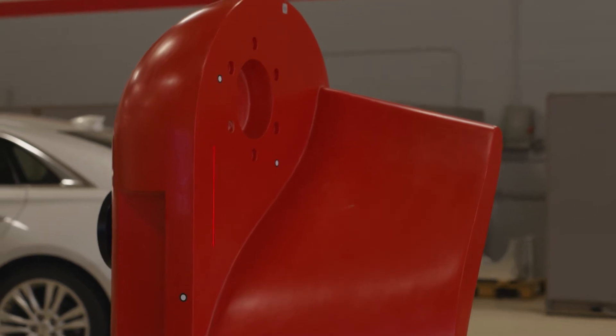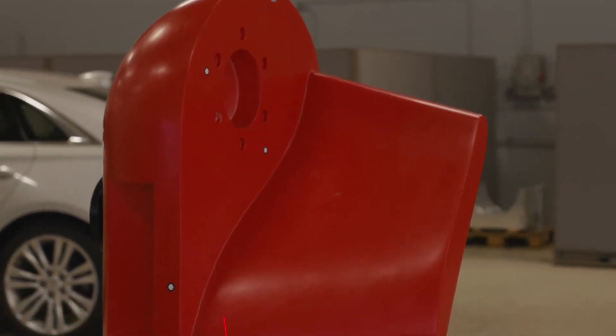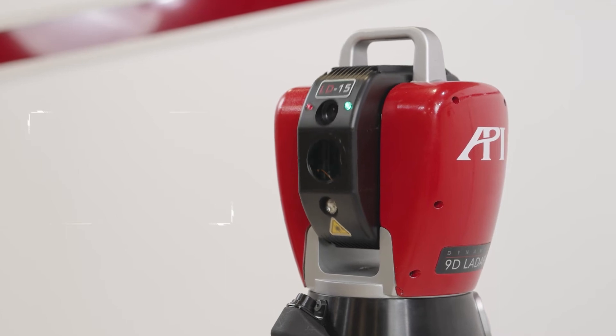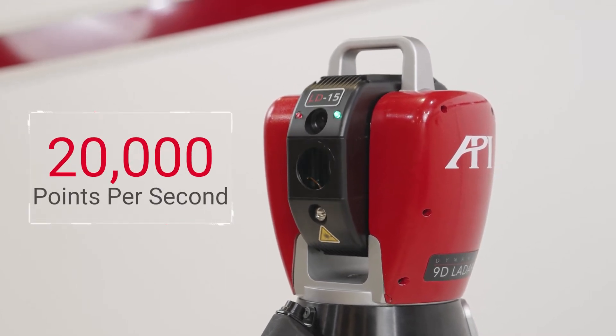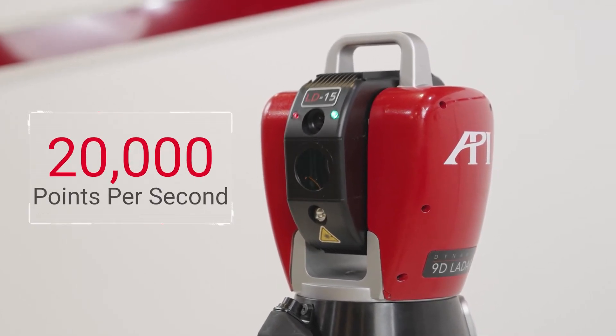These lasers, like the Class 1 Helium Neon laser Dynamic 9D LADAR uses, send out 20,000 points per second, calculating the X value of linear distance to the part. The faster the point reaches the part, the shorter the distance and vice versa.